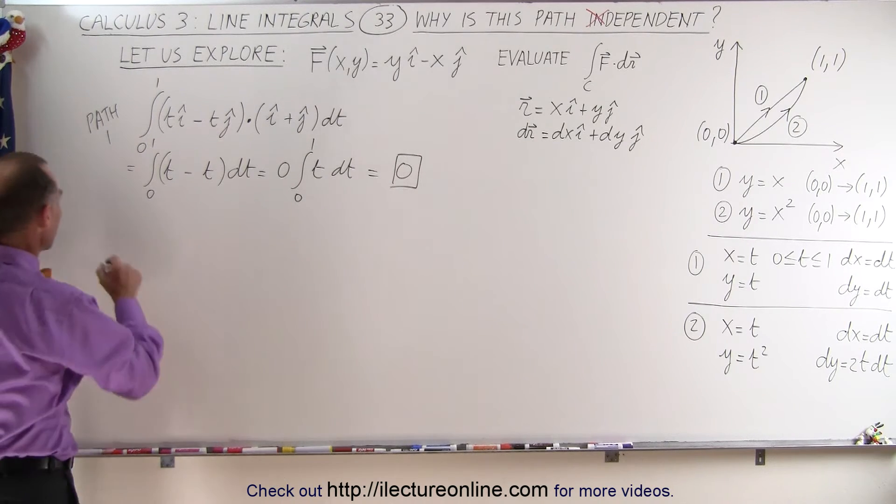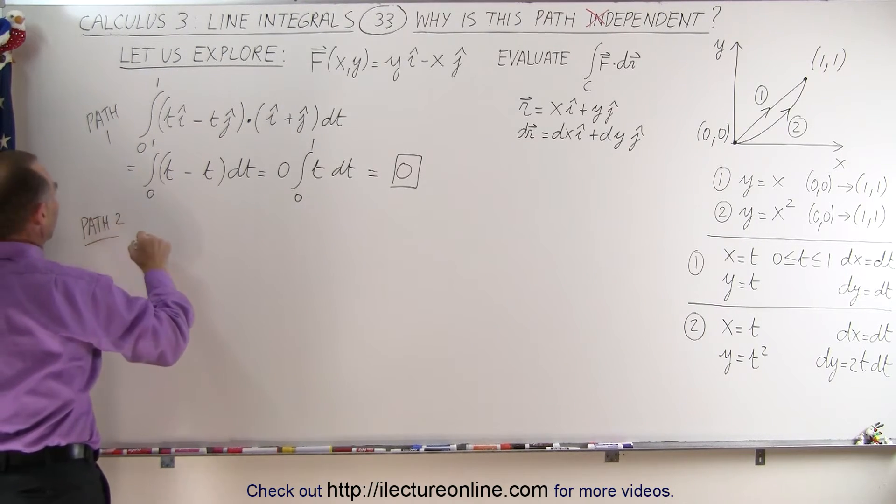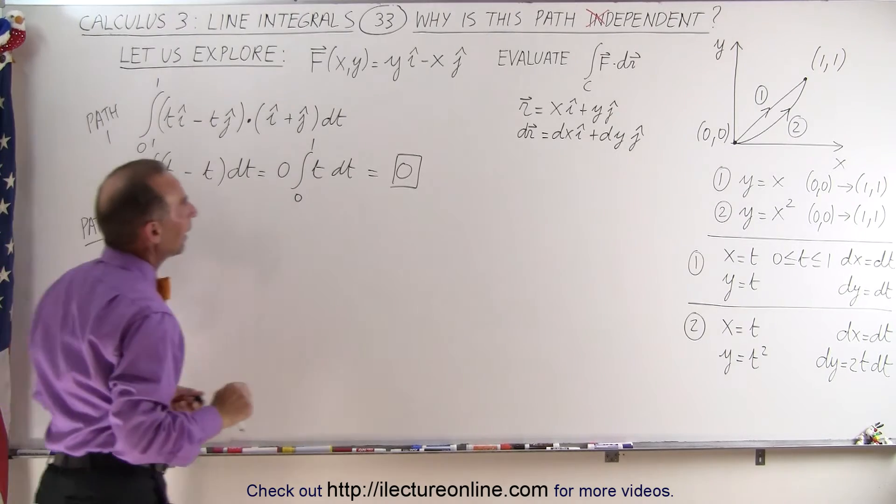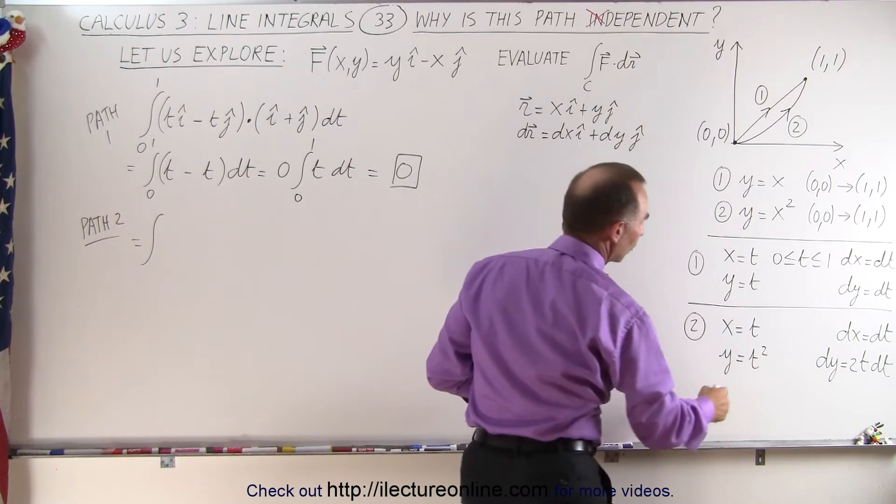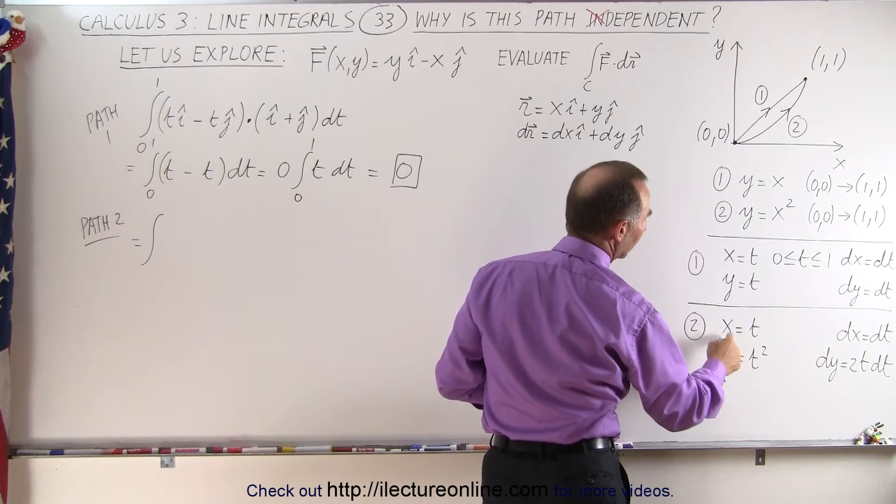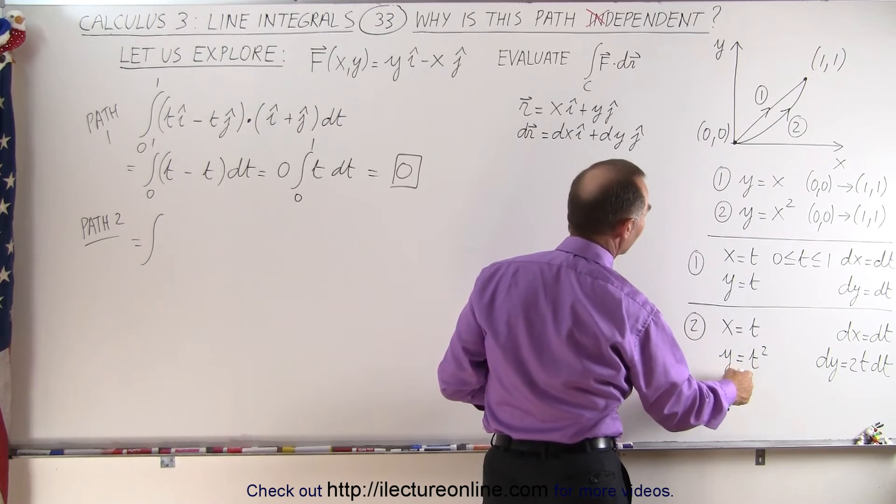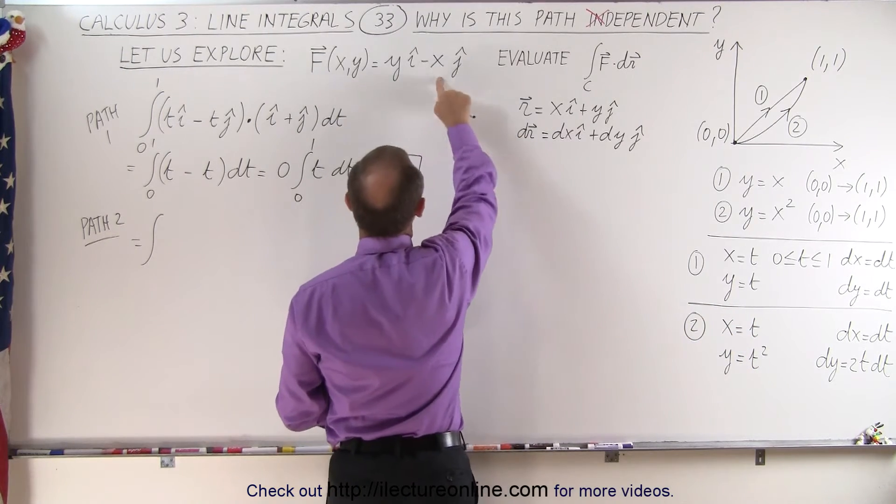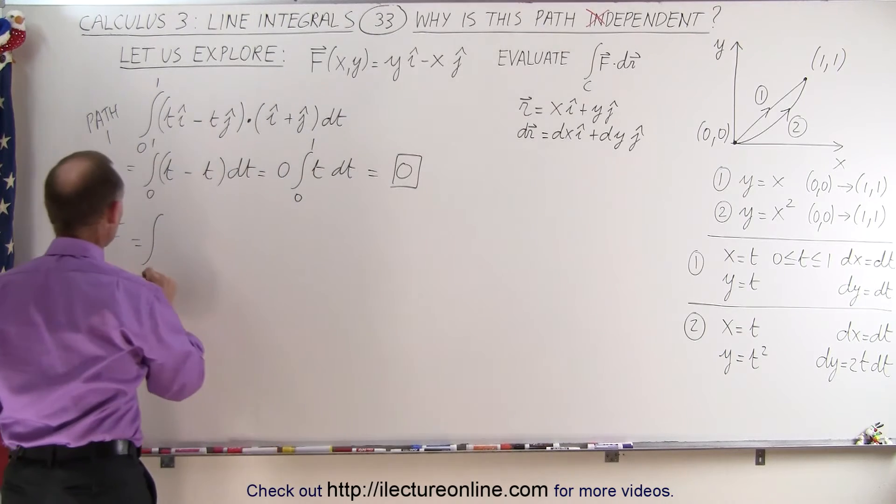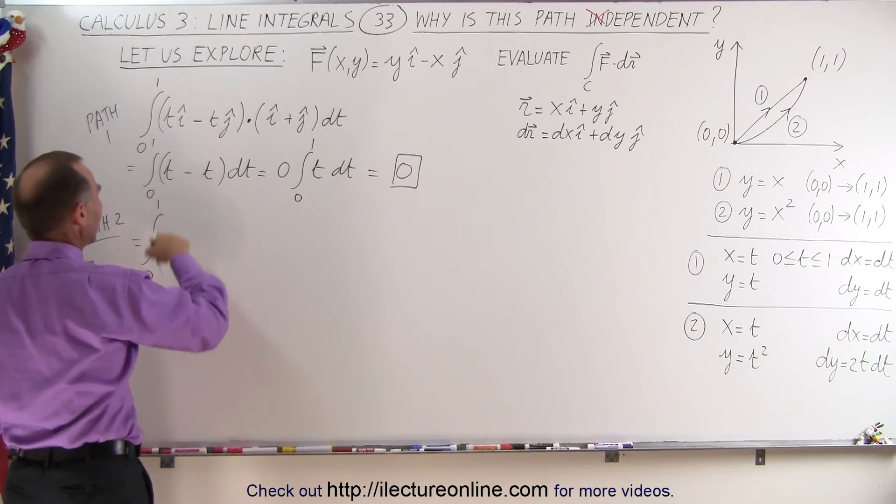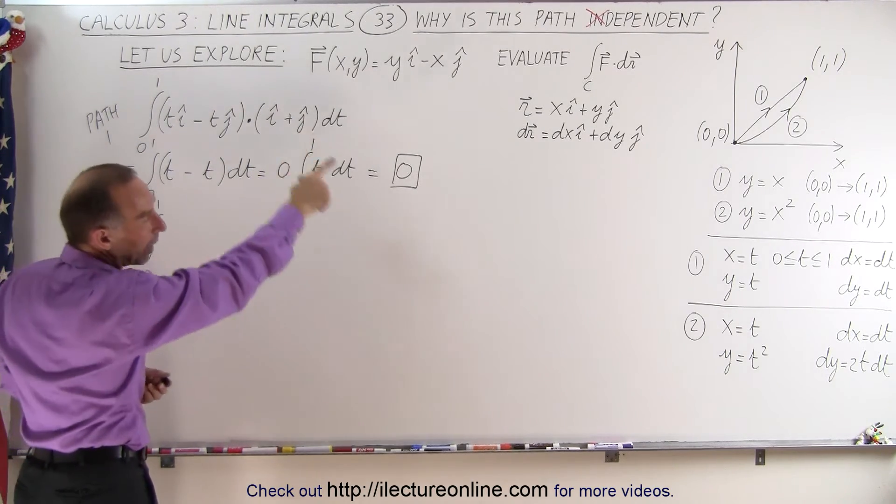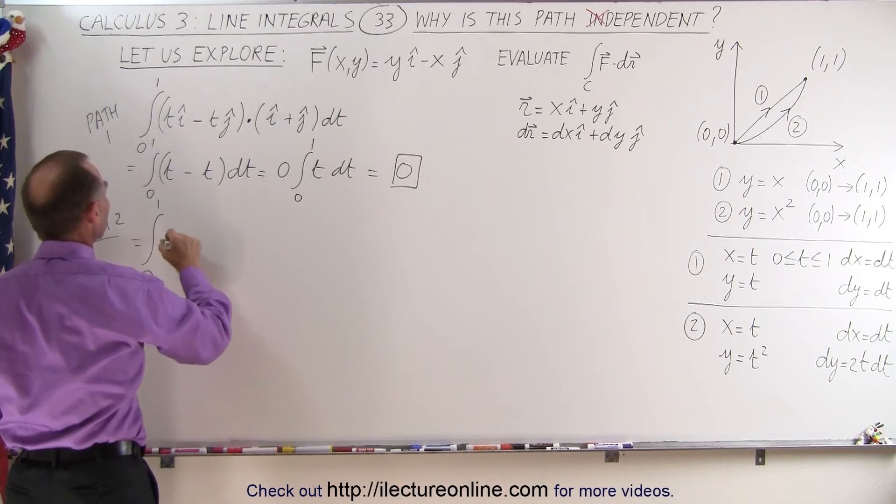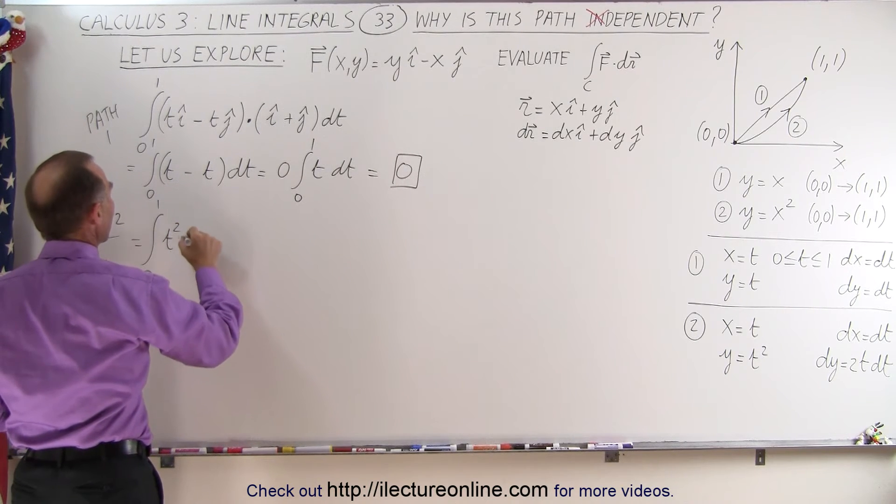Now let's take path number 2, and so this becomes the integral. And now notice that we're going to use two different parametric equations: x becomes t and y becomes t squared. We plug that in for y and x right there, so this is from 0 to 1 because we're integrating over the t limits. y is going to be t squared in the i direction.